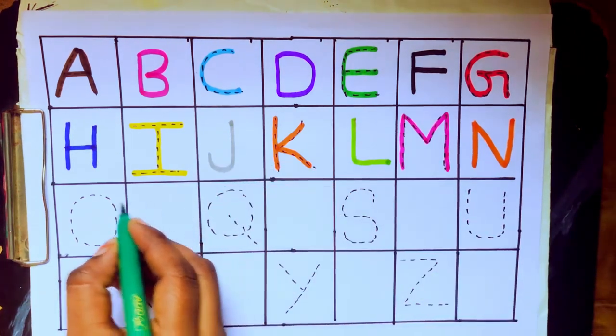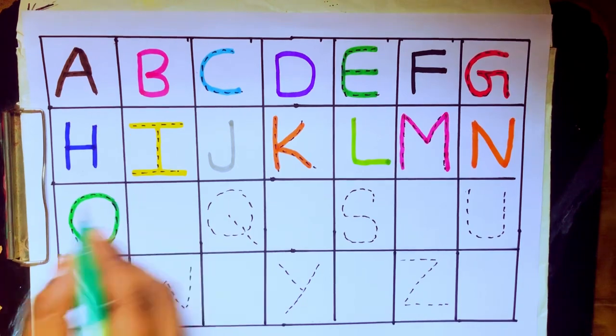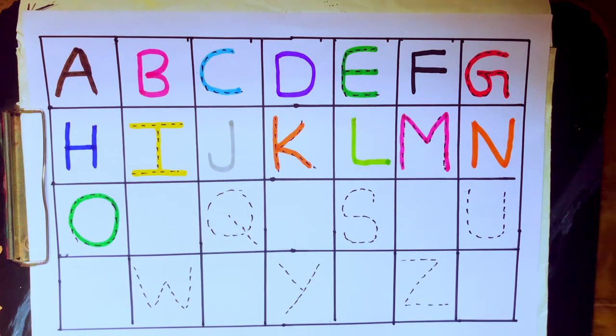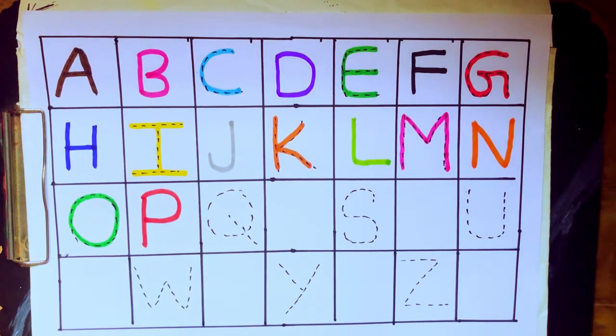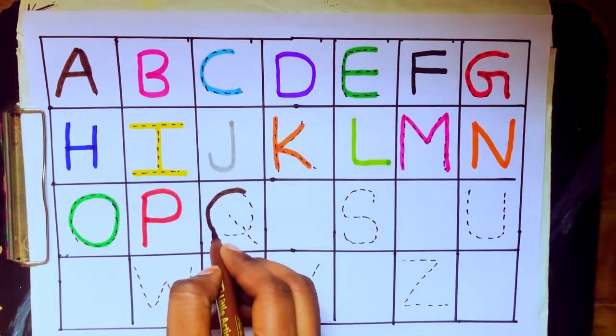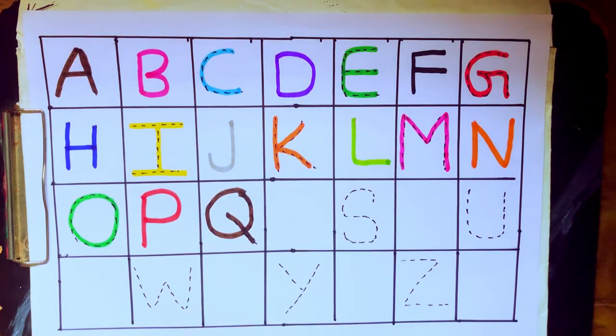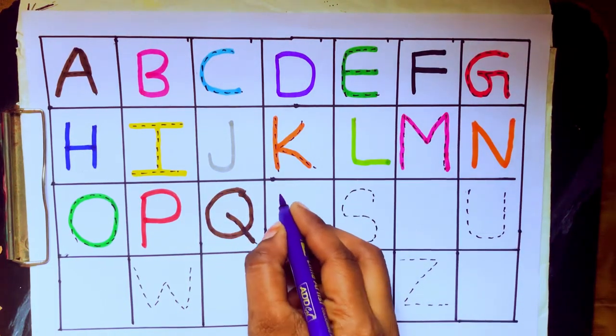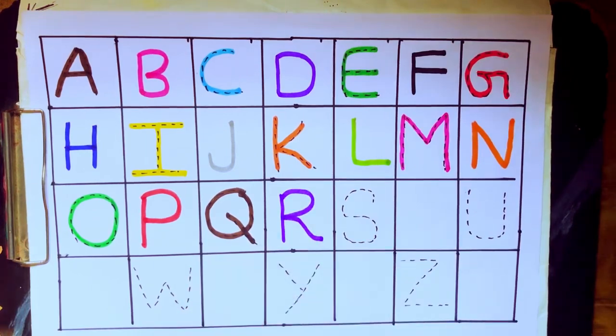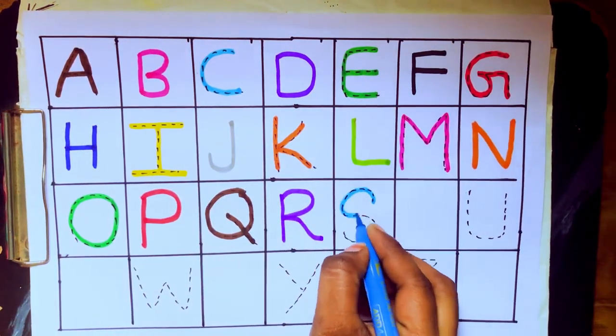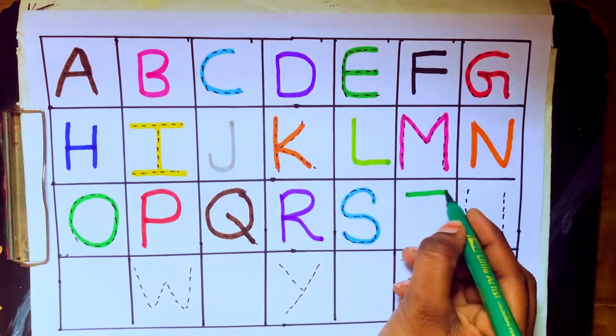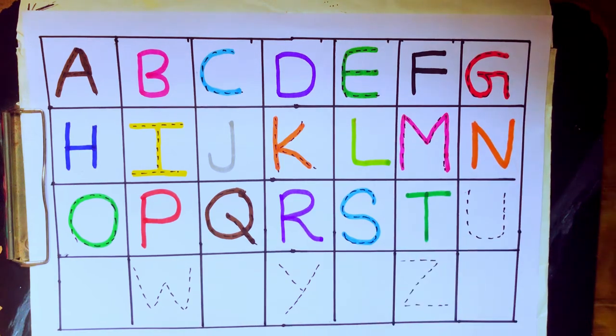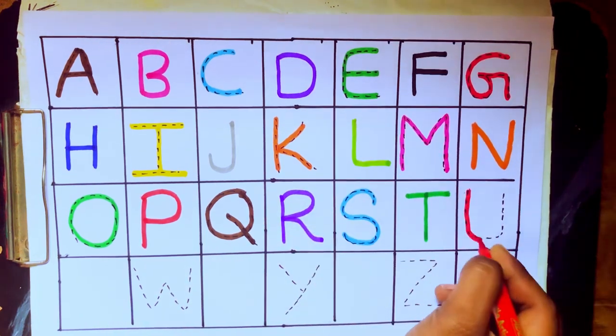Green color: O, O for Ox. Red color: P, P for Pen. Brown color: Q, Q for Queen. Violet color: R, R for Rose. Sky blue color: S, S for Sun. Green color: T, T for Ten. Red color: U, U for Umbrella.